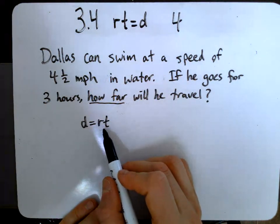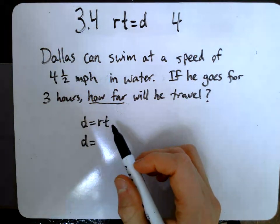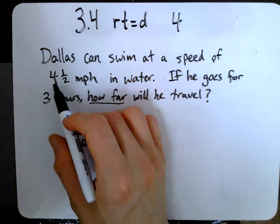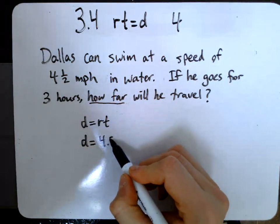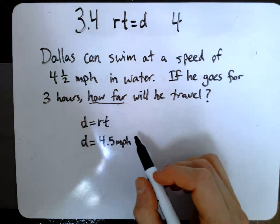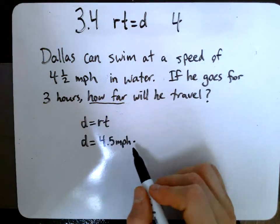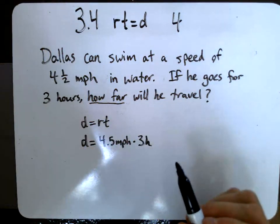Now I just need to plug in my rate and my time. So I'm going to rewrite this. D equals, and instead of R, I'm going to put my rate, which is 4.5 miles per hour, times my time, which is three hours.